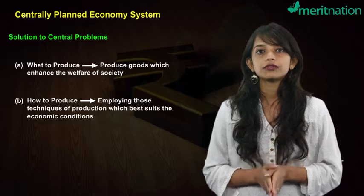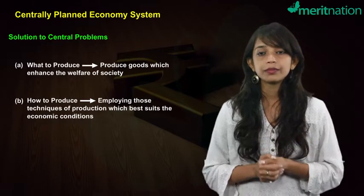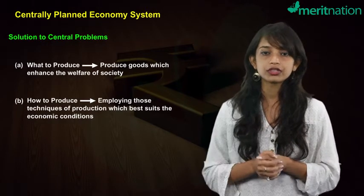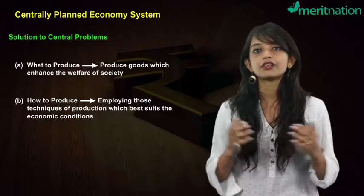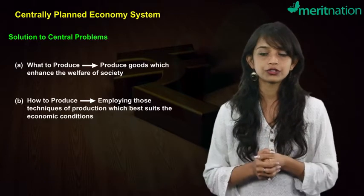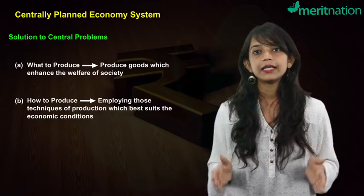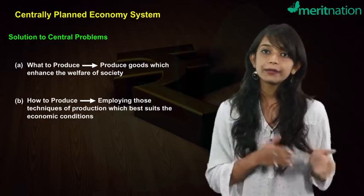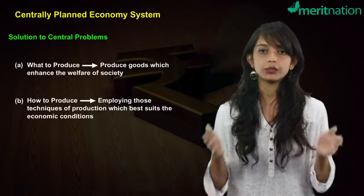The second problem of how to produce is solved by employing those techniques of production which best suit the economic conditions of society. For example, if labor is in abundance over capital, then more labor-intensive techniques would be used, and vice versa.